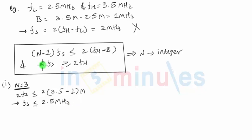The second statement says that n fs, n is 3, that means 3 fs should be greater than equal to twice fh. Twice fh will be nothing but 2 times 3.5 megahertz. Now this means fs should be greater than equal to 2 times 3.5 which is 7 divided by 3, which will be 2.33 megahertz.